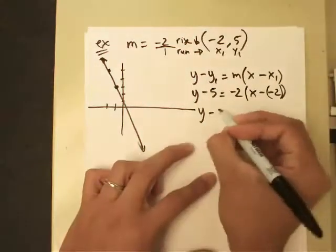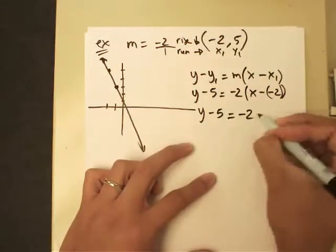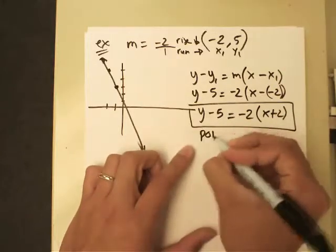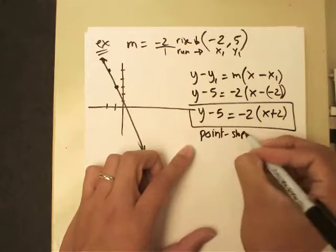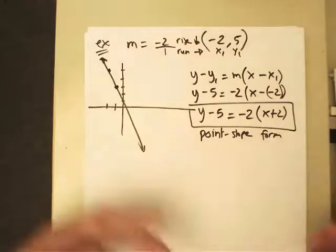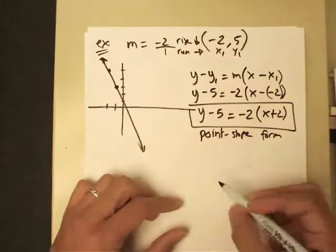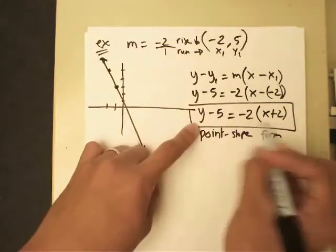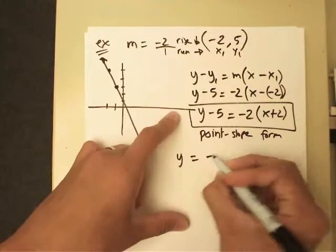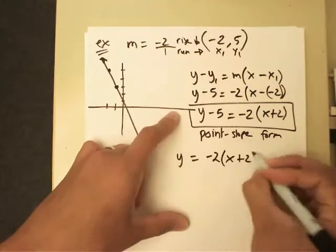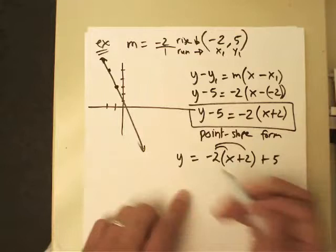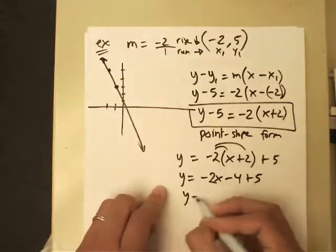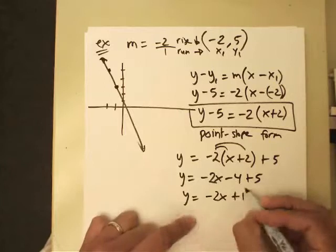So there you go. So let's clean it up a little bit here. Negative 2 times x plus 2. Now, this right here is what we call the point-slope form. Now, if you solve it further, if you solve for y, it will now become a slope-intercept format. Let me show you how that works. So you want to solve for y, you would add the 5 over, so that means it will be like this. And of course, you can quickly simplify that.